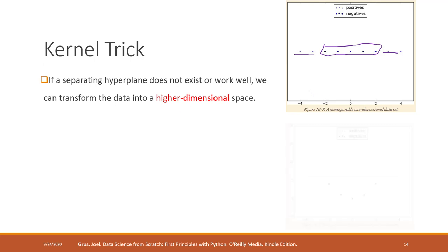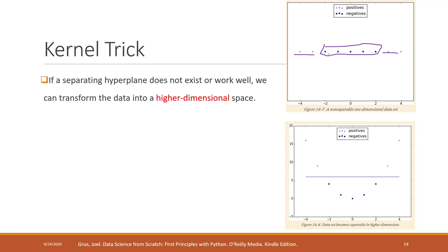The kernel trick means we are going to convert this one-dimensional data into two dimensions — for example, by using the square of those values or something like that. We do some calculations on those features. After converting to two dimensions, we can now find the decision boundary or the hyperplane.